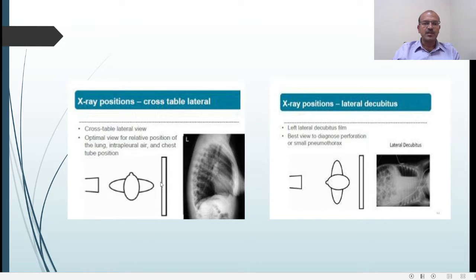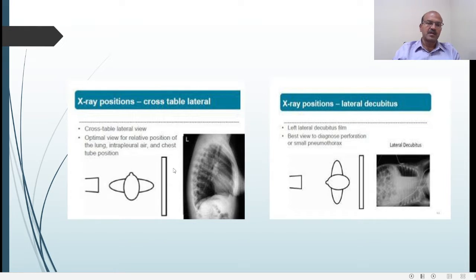The cross-table lateral is just across the table — the machine is tilting to the side of the patient, and the plate is kept perpendicular to the patient's axis. So here you are taking a lateral view.